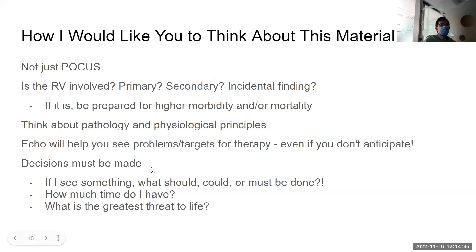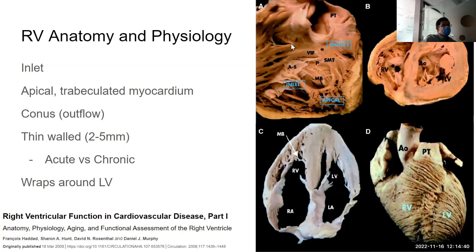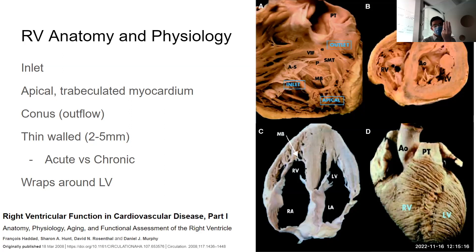Some basics of anatomy and physiology: the RV is divided into three parts. There's the inlet — the tricuspid annulus, the papillary muscles, the subvalvular apparatus — the apical trabeculated myocardium, and the outflow, which is the conus. Think of it like your hand: the thumb is your RV inflow, and it wraps around out through the conus. This is very different from the LV, which is basically like an ice cream cone where things come in one side and go out the top. Whereas the RV comes in one direction and goes out the other.